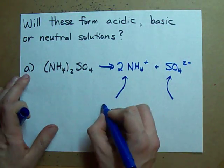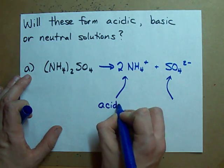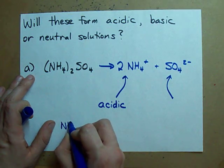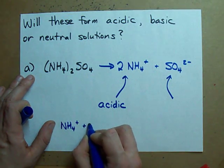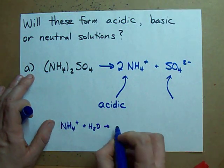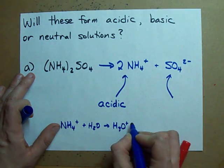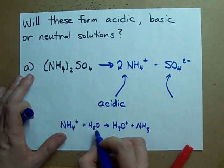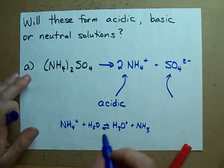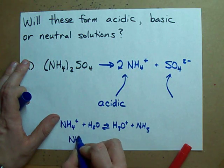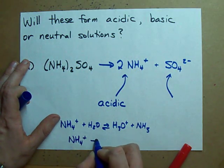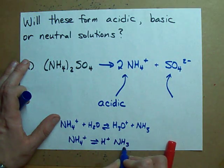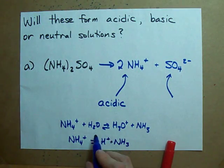NH4+ is acidic because it can donate a proton. In fact, NH4+ reacts with water to make H3O+ and ammonia. That's a legit equilibrium that happens. You may also want to just consider it as ammonium simply breaking up into a proton and ammonia, but either of these is okay.